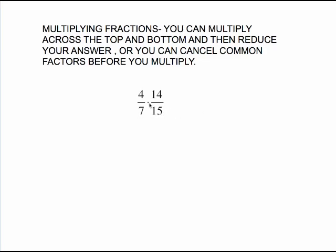Or you can do some internal canceling before you multiply. I'll do the first method, just multiply across. 4 times 14 is 56, 7 times 15 is 105. I'm left with something that I can't tell if it reduces or not. That's the problem with just plain old multiplying to start.